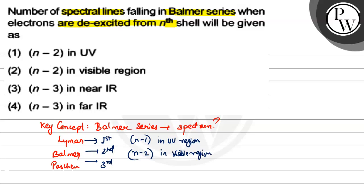In the Paschen series, electrons fall to the third shell — so there are n-3 spectral lines in the infrared region. Here we have to find the Balmer series, which is in the visible region, so option 2 will be the correct option. I hope that helps — thank you very much.